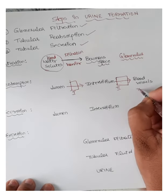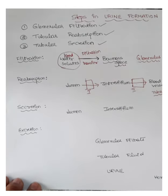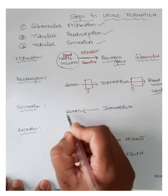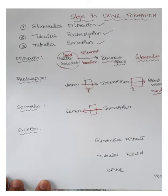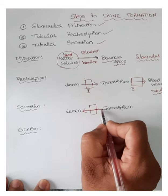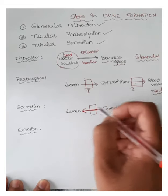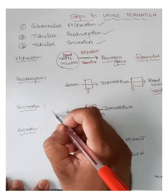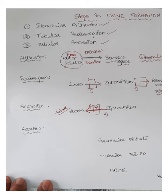Reabsorption occurs in the tubule of the kidney, therefore it is called tubular reabsorption. Secretion is a process where substances move into the tubular lumen from the interstitium across the epithelium. Substances present in the interstitium cross the epithelium and reach the lumen, or substances can be synthesized in the epithelium itself and secreted into the lumen. Since this occurs in the tubule, it is called tubular secretion.